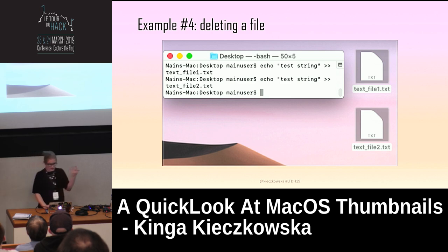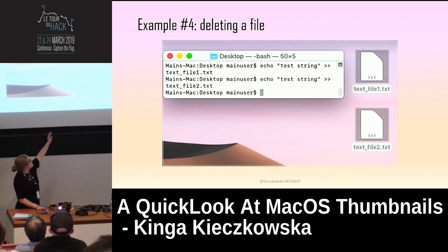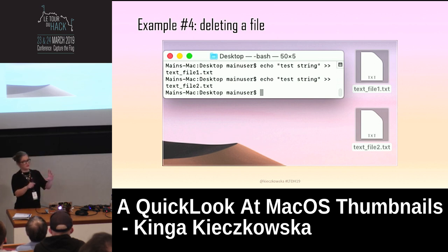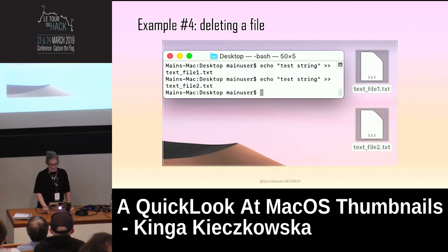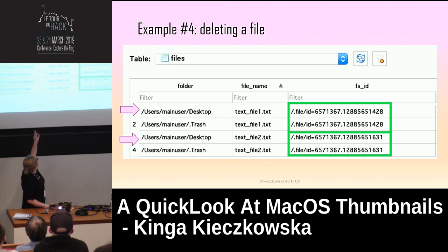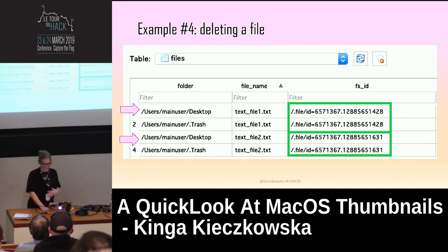What happens when you delete a file? I created two TXT files — based on my research they also produce thumbnails, and the layout of the document is actually reflected in the thumbnail. I put them in trash and then clicked 'empty trash' so they're super deleted. What actually happened was that it created yet another entry in the cache for each file, where the folder field says 'desktop' first and then 'trash'. So if you want to be extra careful and go into the trash and delete the contents, it only increases the footprint in the cache. Don't do that if you don't want to be exposed.